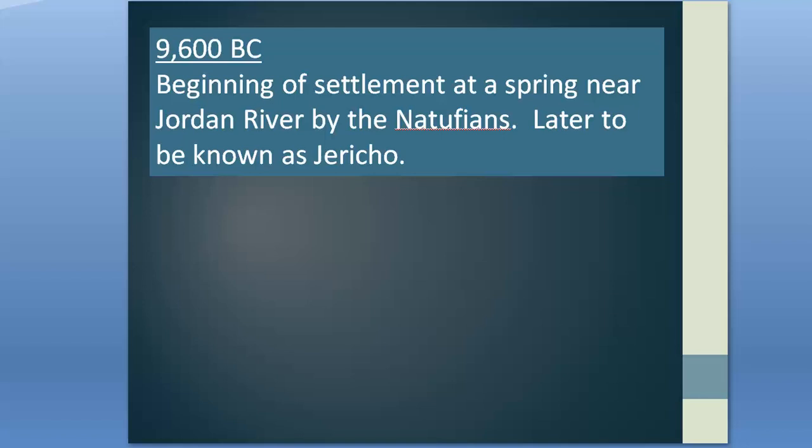Next time: Jericho will continue to grow under a new culture that will usher in the Neolithic era, Göbekli Tepe undergoes a transformation from its initial roots, Europe continues under the Mesolithic age with new sites appearing in the UK, and North America sees the successor of the Clovis culture. That and much more in Episode 4 of Timeline of World History: 9,000 to 8,000 BC. Thank you for watching.